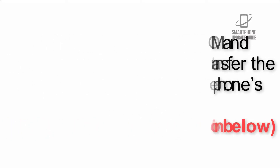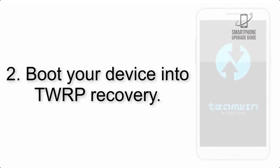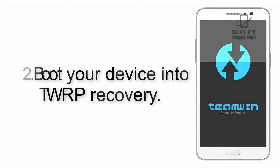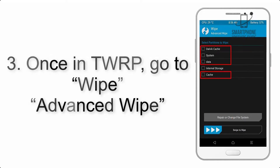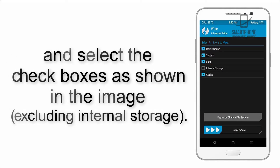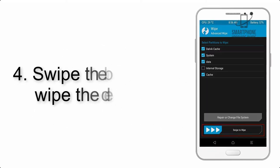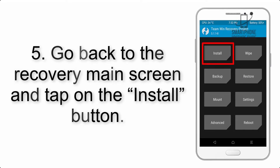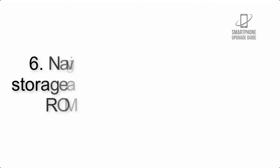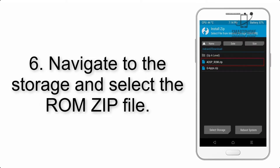Step 2: Boot your device into TWRP recovery. Once in TWRP, click on Wipe, then Advanced Wipe, and select the checkboxes as shown in the image, excluding internal storage. Step 4: Swipe the button to wipe the device.